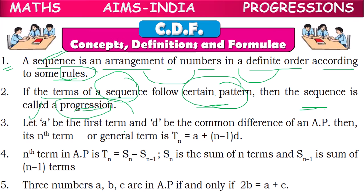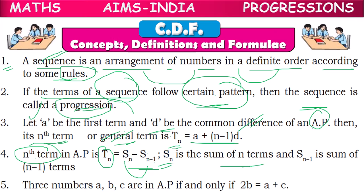Let 'a' be the first term and 'd' be the common difference of an arithmetic progression. Then the nth term, or general term, Tn of an AP is given by the formula: Tn = a + (n−1)d. Also, Tn = Sn − S(n−1), that is, the sum of n terms minus the sum of (n−1) terms gives the nth term, where Sn is the sum of n terms and S(n−1) is the sum of (n−1) terms.